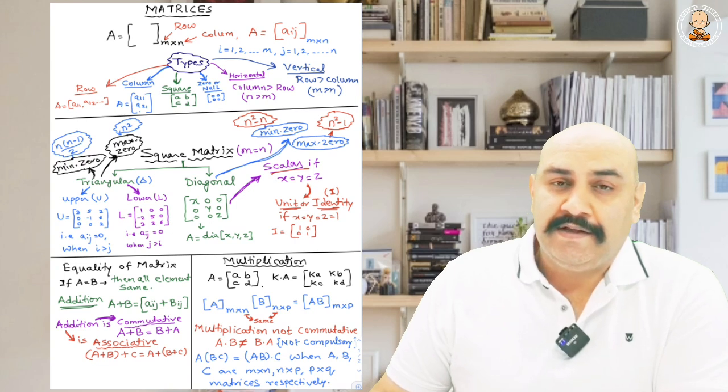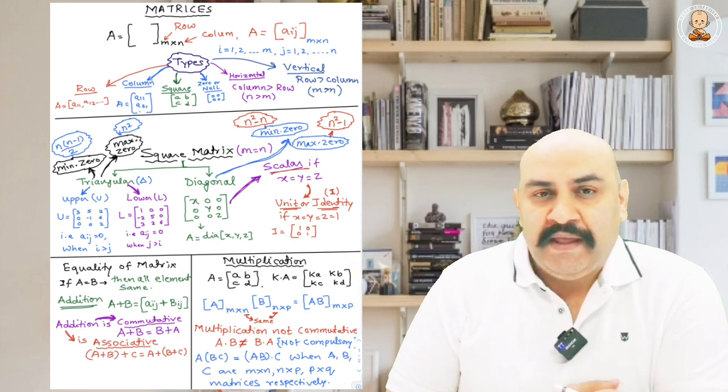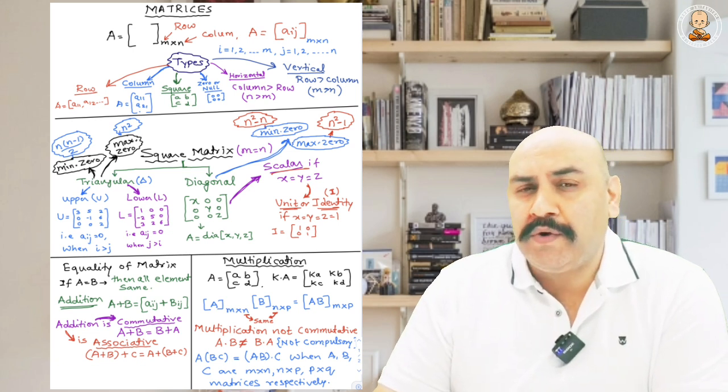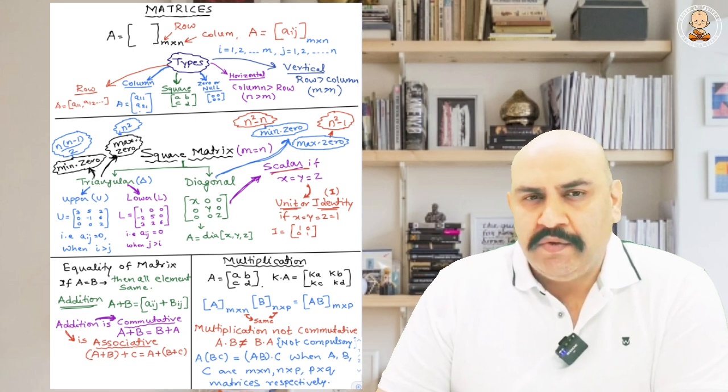It will be much more helpful if you use different colors while making short notes — maybe 3 or 4 colors. Different colors, symbols, and notations will be much easier to remember and retain for a longer period. You can also highlight things with a highlighter of different colors. Now, to show how to make effective short notes, I have already made a few sample short notes for you — for matrix, kinematics, and electrical circuits. These are at a school-level format, helpful for 11th and 12th students, and common to all.